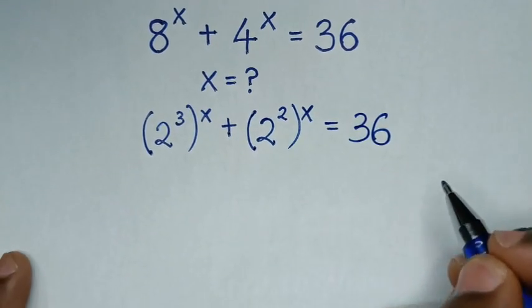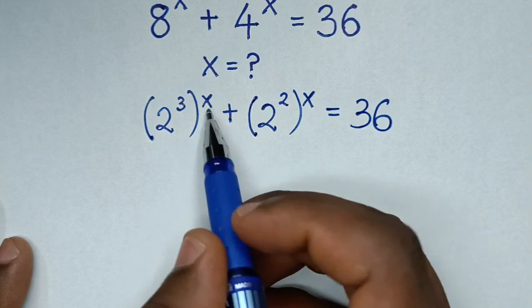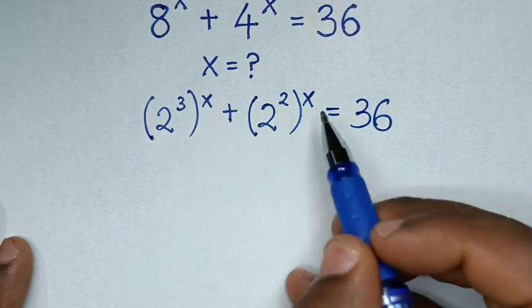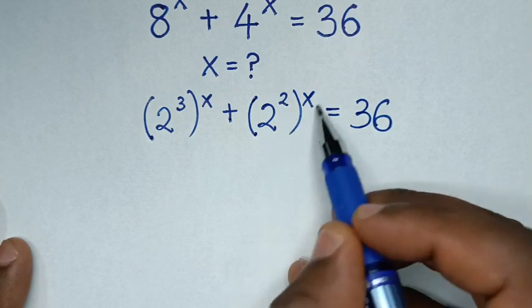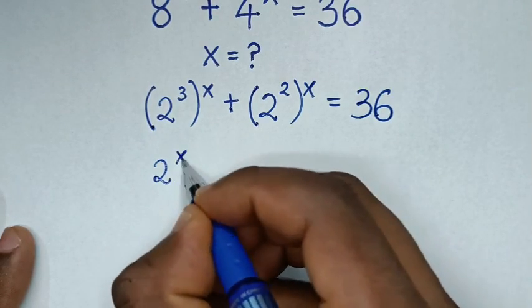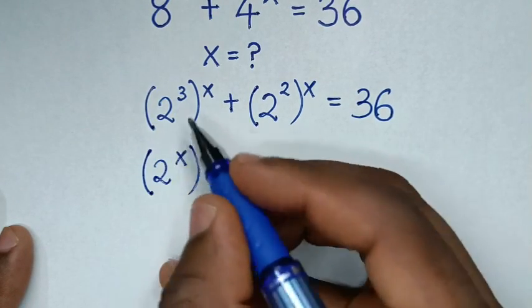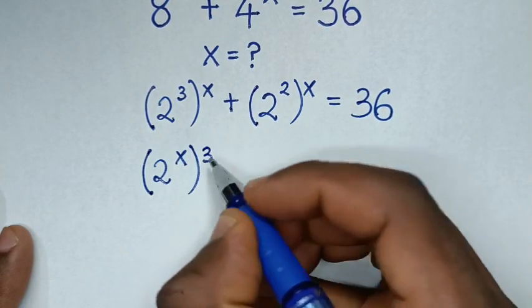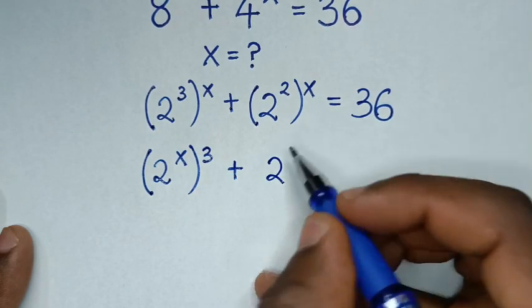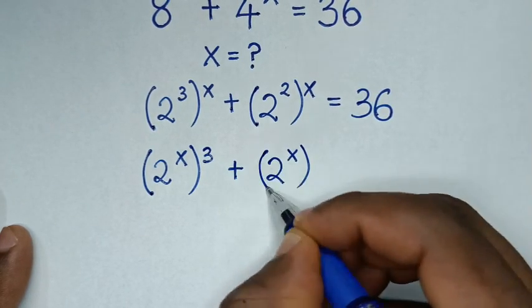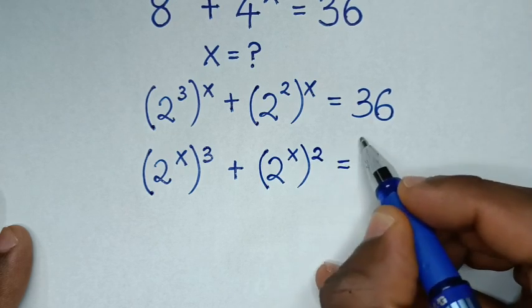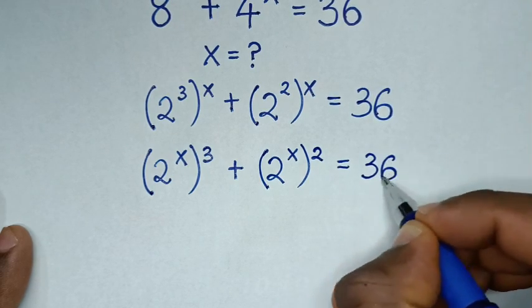Then in the next step, we will exchange the powers — this power of x goes inside, power of 3 outside. Also here, power of x inside, power of 2 outside. So it will be (2^x)^3 plus (2^x)^2 is equal to 36.